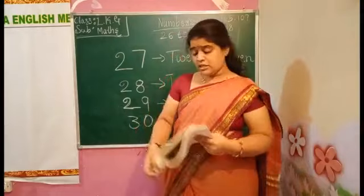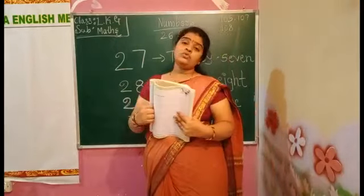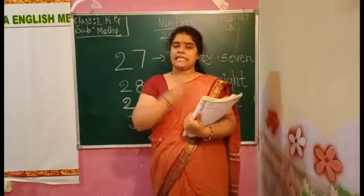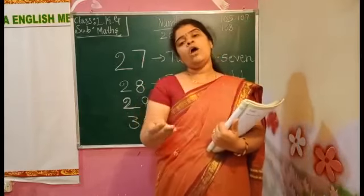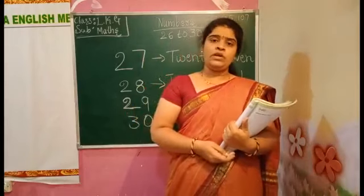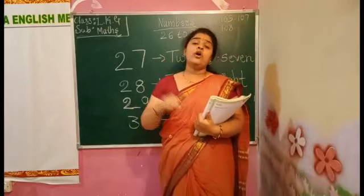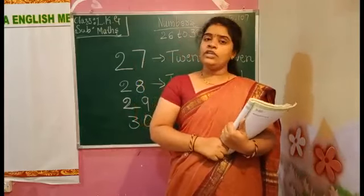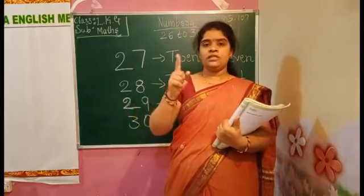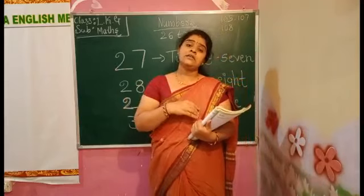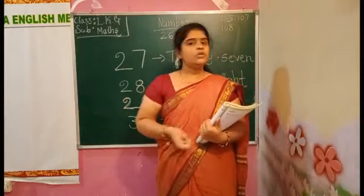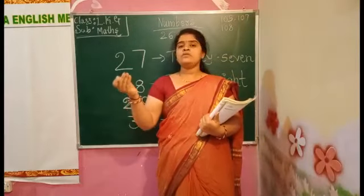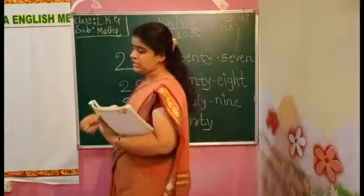Today we learned numbers 26 to 30. You have to do these activities in your test books as well as in your fair book. Already I told you how to write numbers and how to draw pictures. We already did 1 to 20 in previous classes, and then 21 to 25 in last classes. Like this we have to do the remaining numbers — 26 to 30.